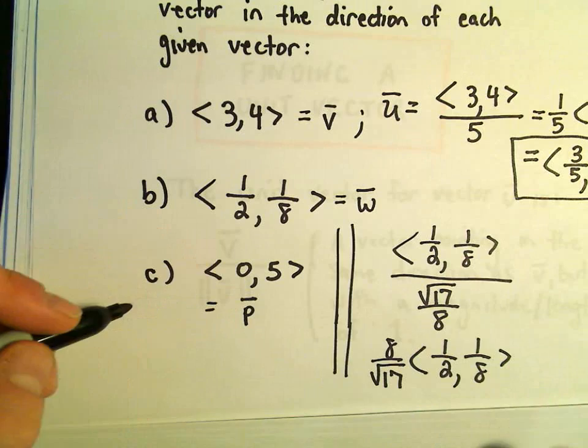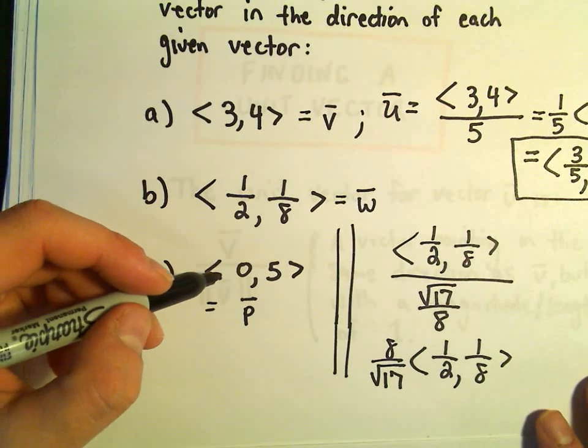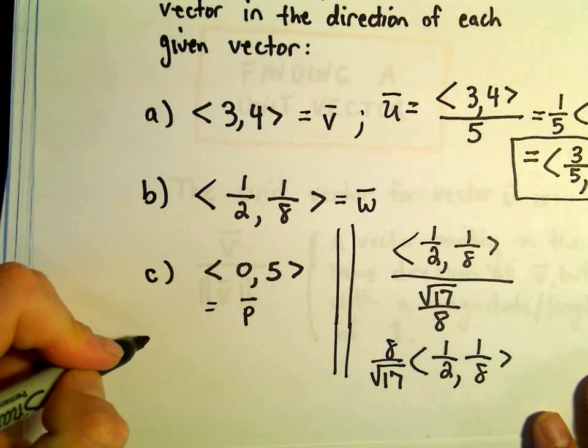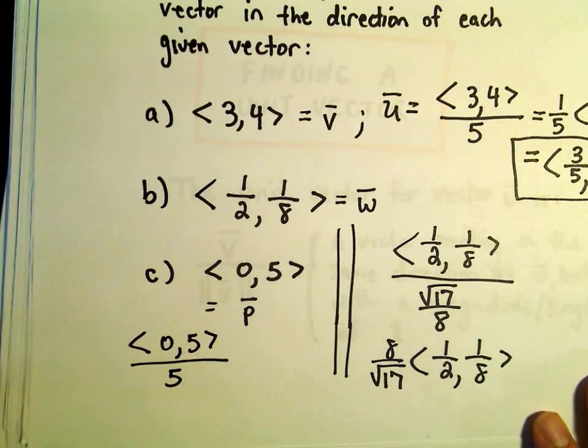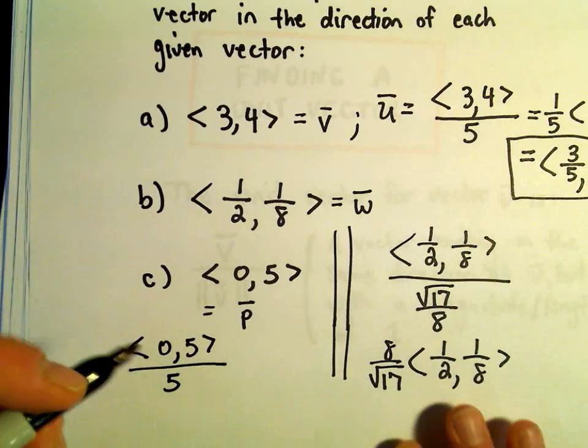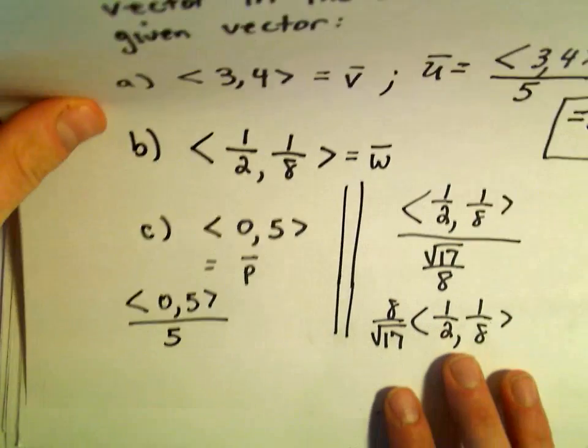So, all we have to do for our vector here in part C is we'll just take 0, comma, 5. We'll divide that by its magnitude, which is 5. Again, that's the same thing as multiplying by 1 fifth.